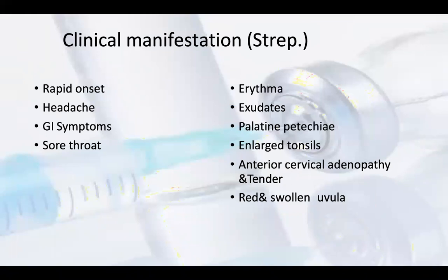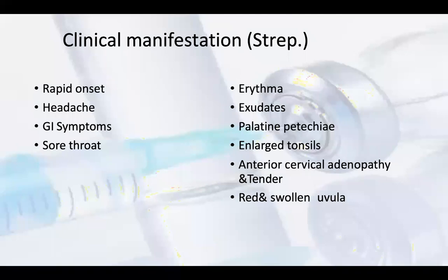Key manifestations when there is infection by Streptococcus include rapid onset, headache, and GI symptoms. There is sore throat with exudates, petechiae, enlarged tonsils, anterior cervical adenopathy, and tender, red, and swollen uvula found on clinical examination.